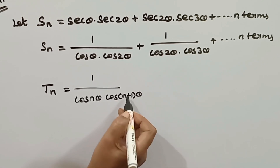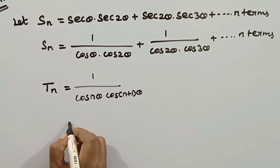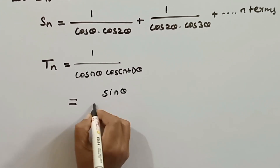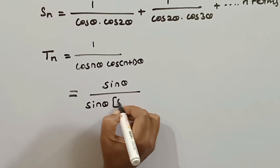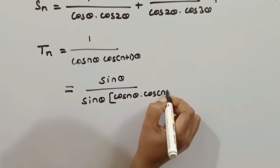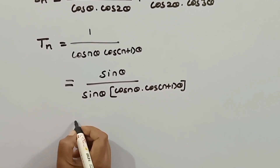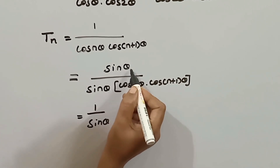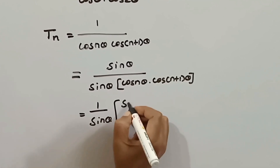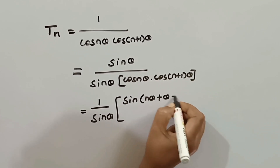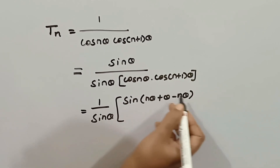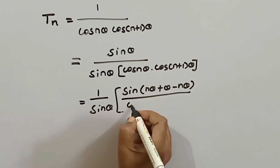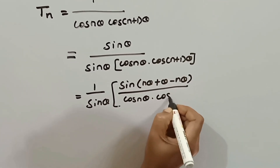Next, we will note the general term and mark the difference in this term. We will multiply by sin(θ) and divide by sin(θ). We will note the general term as 1/[cos(nθ)·cos((n+1)θ)], and we mark the factor 1/sin(θ).